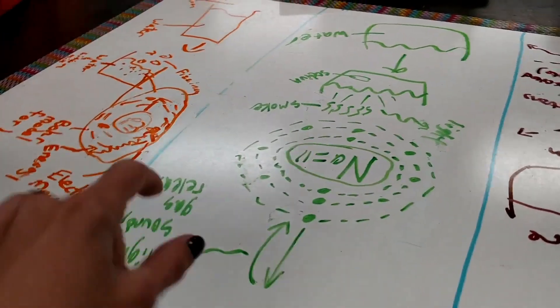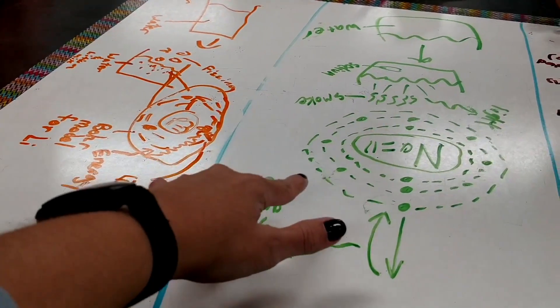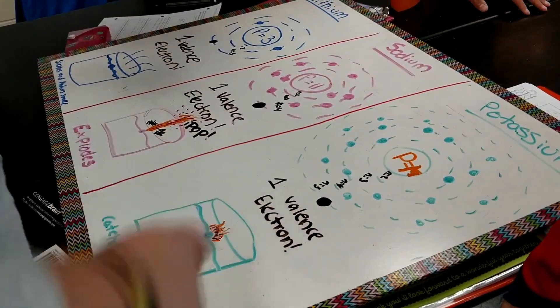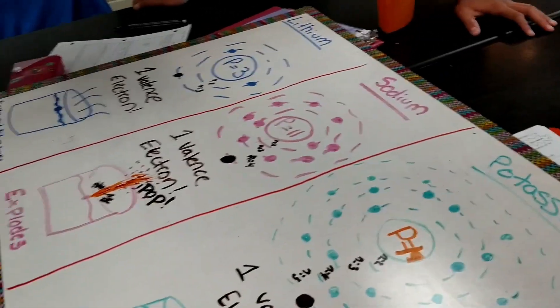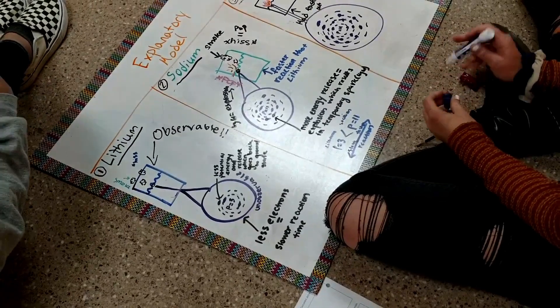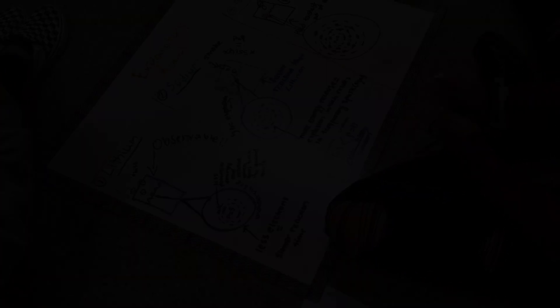The plan is to allow students to accrue more content knowledge. They have their baseline phenomenon explanation, then we're going to talk about Coulombic attraction, and based on what they learn they'll revise their explanation. Then we'll talk about Coulombic attraction, effective nuclear charge, and ionization energy, and then revise their explanation again — so they can see how their explanation has changed as the unit has progressed.